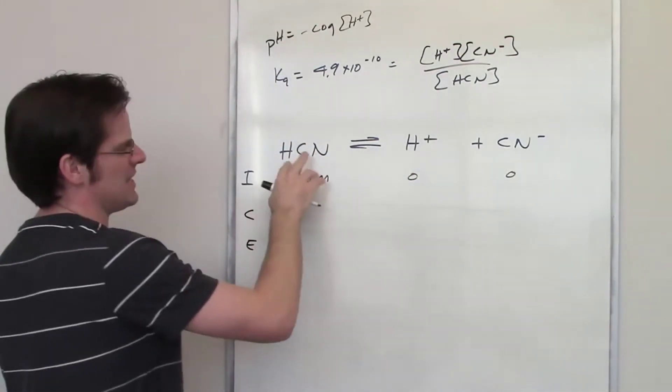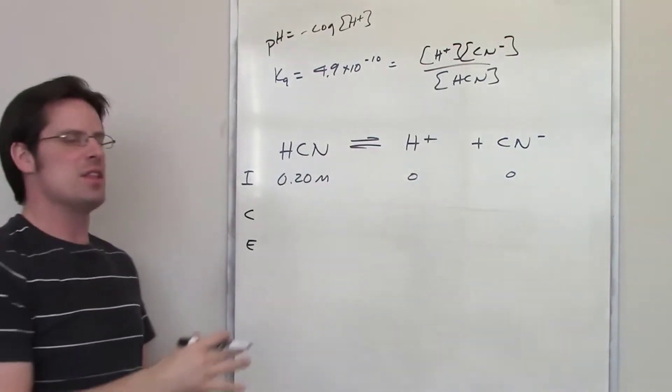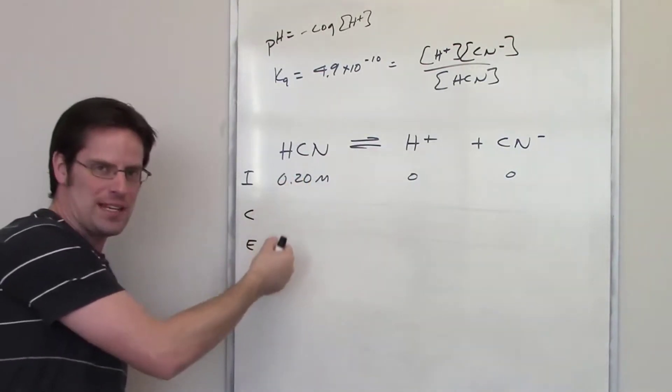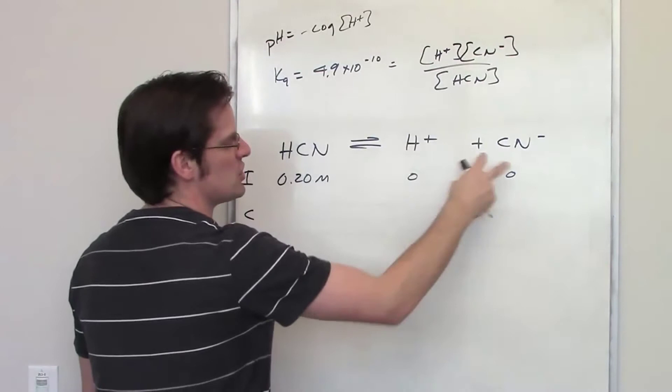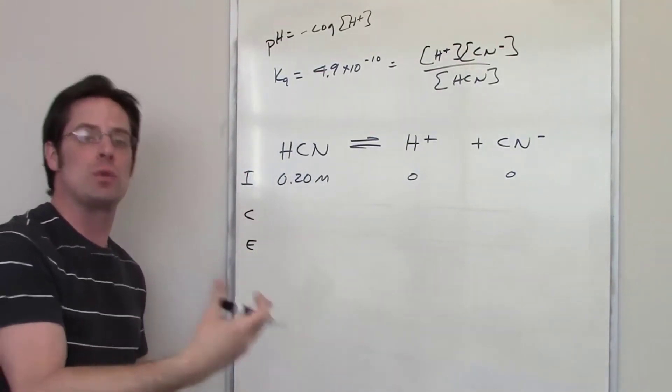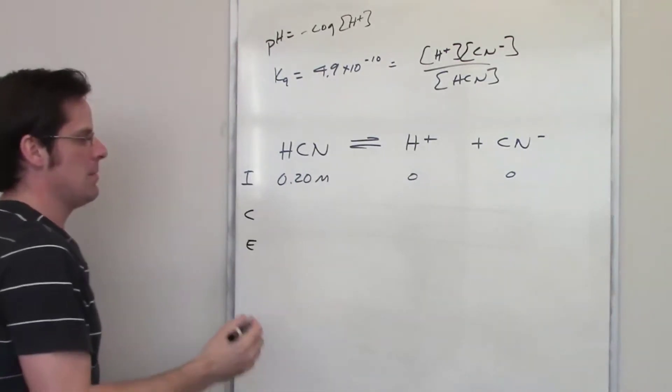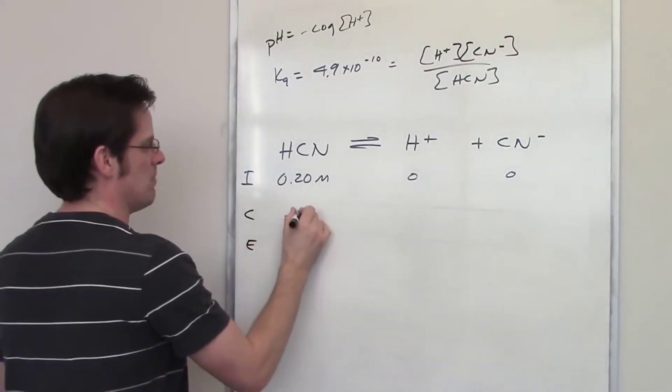Now what's going to happen is this thing is going to float around in solution, go back and forth, back and forth, back and forth, and the concentration of this is going to decrease while the concentrations of these two are going to increase by some amount until we reach equilibrium. By what amount is it going to be? I don't know. I'm just going to call this amount minus X.